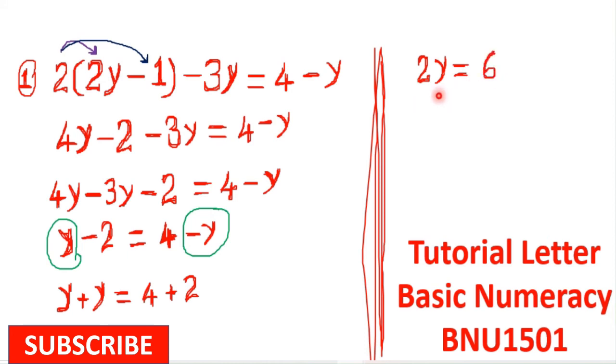From there, in order to get rid of this 2, we must divide both sides by 2. Two divided by two is one. Any number multiplied by one or divided by one is that number, so we have y. Six divided by 2 is 3, so y = 3.